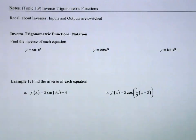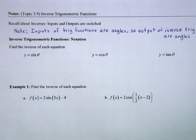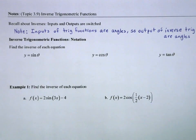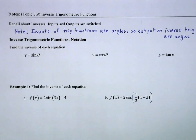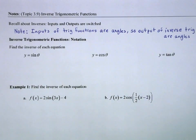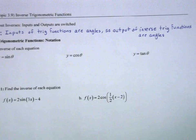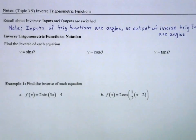For inverses, the inputs and the outputs are switched. For trig functions, our inputs and outputs are very specific. The inputs of trig functions are angles — we take the sine of pi over 2, the cosine of 3 pi over 4. So the inputs are angles, which means for the inverse trig functions, the outputs are going to be angles.